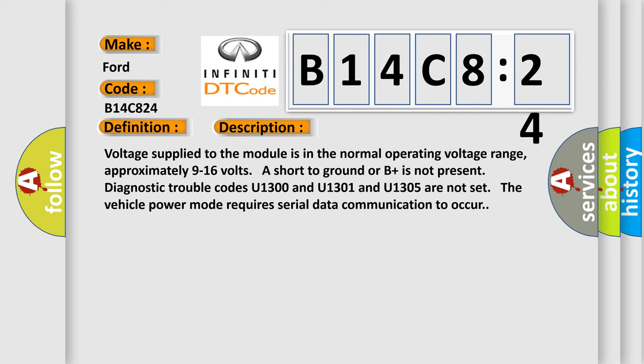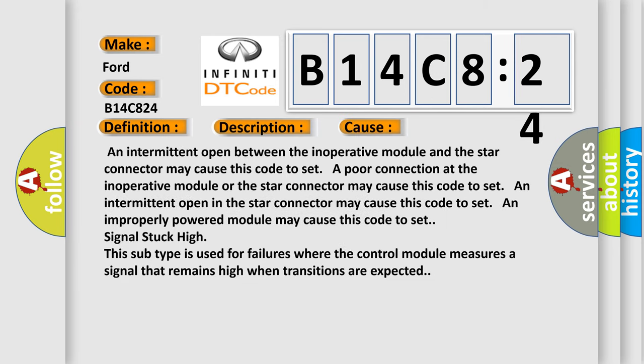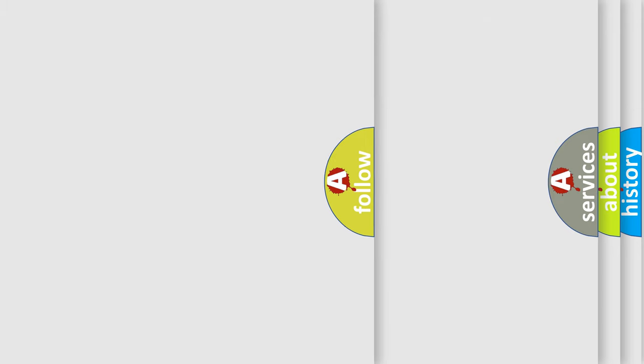This diagnostic error occurs most often in these cases: possible repetitive controls, an intermittent open between the inoperative module and the Star Connector may cause this code to set, a poor connection at the inoperative module or the Star Connector may cause this code to set, an intermittent open in the Star Connector may cause this code to set, an improperly powered module may cause this code to set. Signal stuck high. This subtype is used for failures where the control module measures a signal that remains high when transitions are expected.